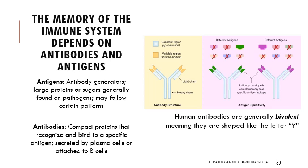Antibodies are Y-shaped and fit together with antigens like Lego pieces — they bind to specific antigens. They're secreted by plasma cells, which are a special type of B cell, or can be attached to B cells. Human antibodies are bivalent and look like the letter Y.